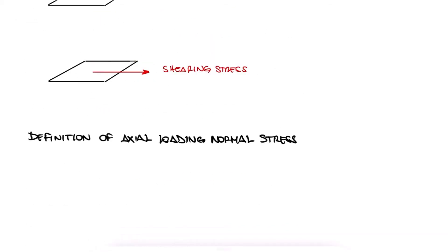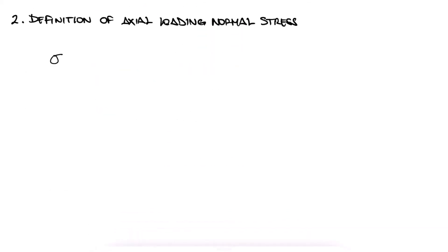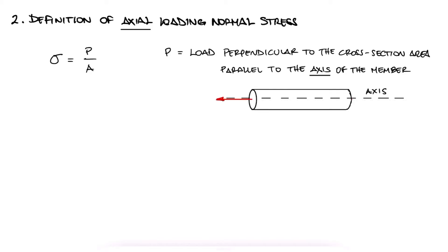Normal stresses due to axial loading are defined as P over A, where P is the load in the direction of the axis of the structure or member, for example, a rod, a beam, or a column, and A is the area of the cross-section at any given location along the axis of the member. Members can have a variable cross-section area along their axis, and this general definition would still hold true.